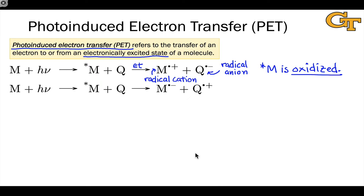Photo-induced electron transfer may also involve the acceptance of an electron by the excited state to form the radical anion of the former excited state and a radical cation of the quencher. In this situation, the excited state M star is reduced and accepts an electron from the quencher. And both of these processes are encouraged through photo excitation for reasons that we'll see shortly.